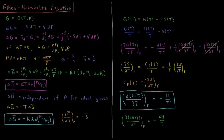This video will discuss the Gibbs-Helmholtz equation in thermodynamics. The Gibbs free energy is a function of temperature and pressure. The change in Gibbs energy that occurs during some small perturbation to the system's state is equal to minus the entropy times the change in temperature, plus the volume times the change in pressure.